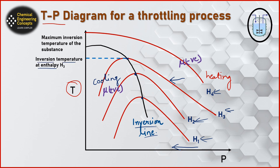The inversion line is the locus of all the maxima of the constant enthalpy curves, and the points where it touches the curves are known as inversion temperatures — for example, one inversion temperature for curve h3, another for h2, and another for h1. Note that not all lines of constant enthalpy have an inversion point. The uppermost curve always has a negative slope, so on expansion the temperature will always rise — meaning μ is always negative for this uppermost curve.